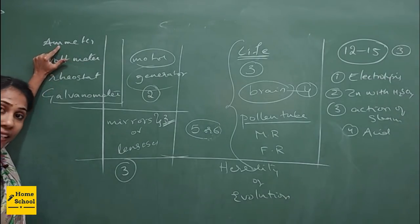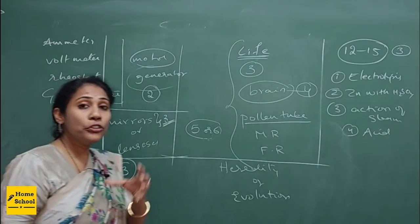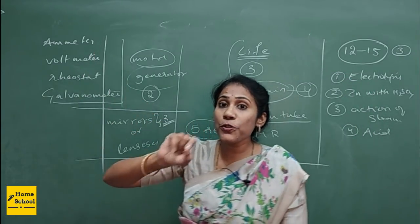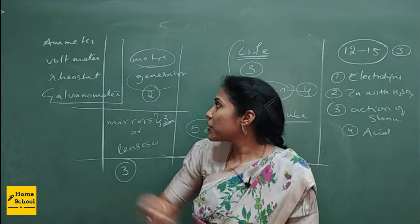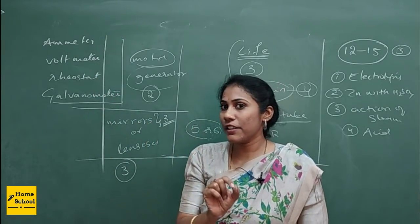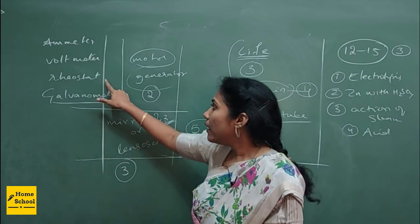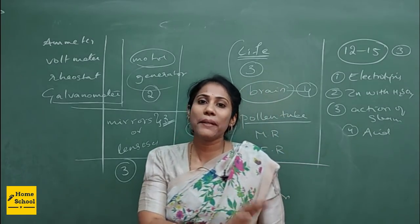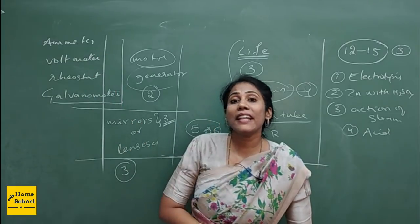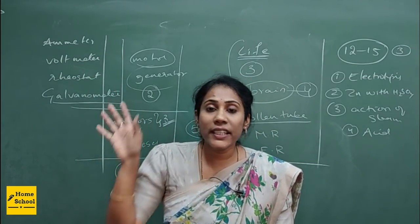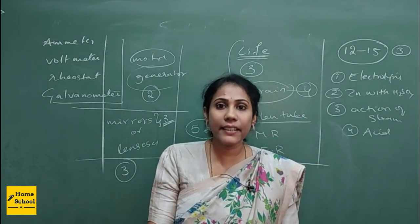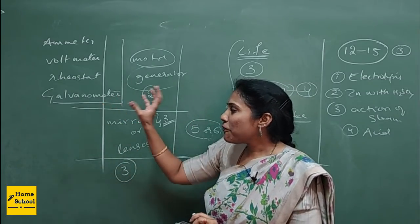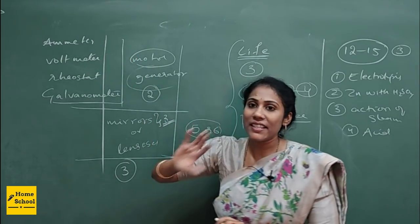Ammeter is always connected in series and is used to measure current in a circuit. Voltmeter is used to measure potential difference, that is voltage. Rheostat is used to regulate or vary the resistance in a circuit. Galvanometer helps us detect the presence of current in a circuit. The difference is that ammeter measures exactly how much current is flowing, while galvanometer detects whether current is present or not, indicated by its deflection. Definitely one MCQ can be framed on the uses of these devices.